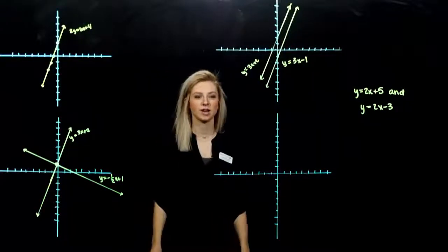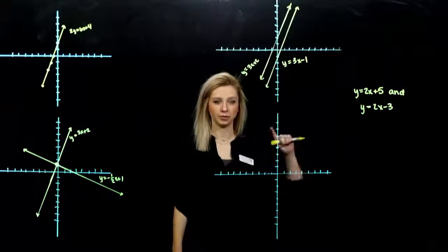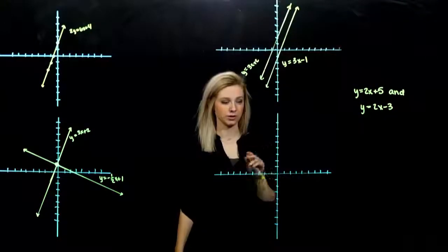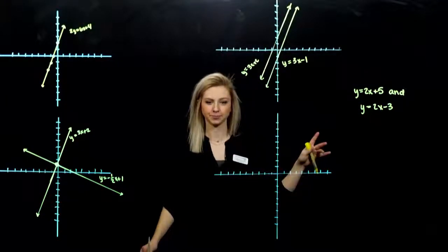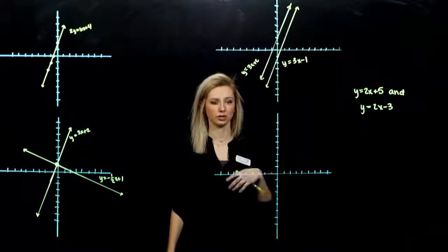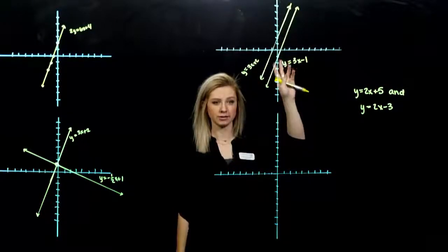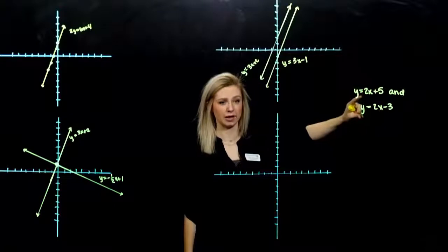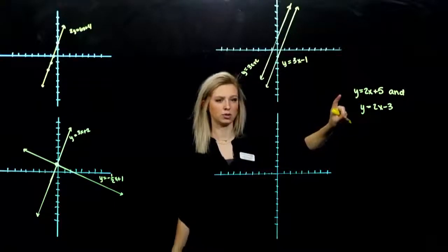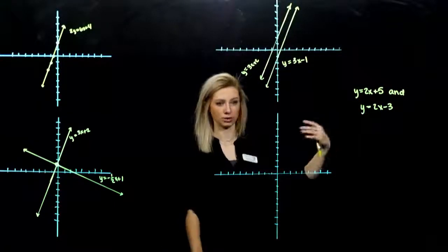In section 3.6, we're going to start talking about the relationship of two lines to each other. So instead of just graphing one line and describing what it looks like based off of the definition, now we're going to look picture-wise, comparing two, and even just looking at the definitions. Comparing these two, what are they going to look like? How are they related to each other?